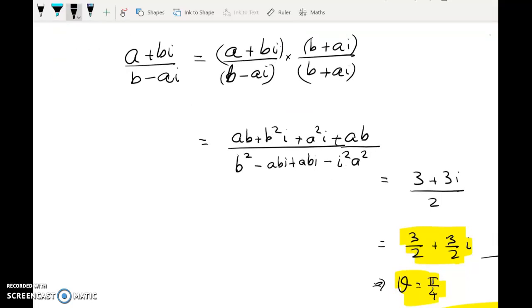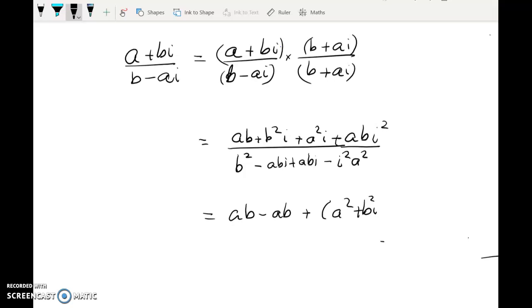Well, let's do that really slowly, actually. Let's put plus a b i squared. And let's get rid of the last question working from over here. So you can see we're just about there, right? And here we've got a b minus a b plus a squared plus b squared i divided by b squared plus a squared.